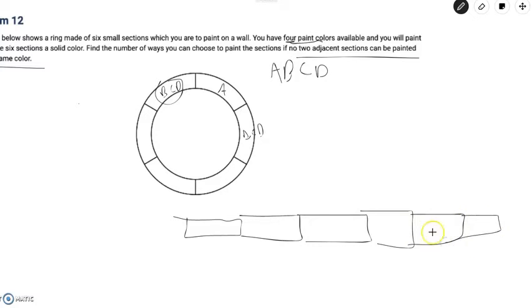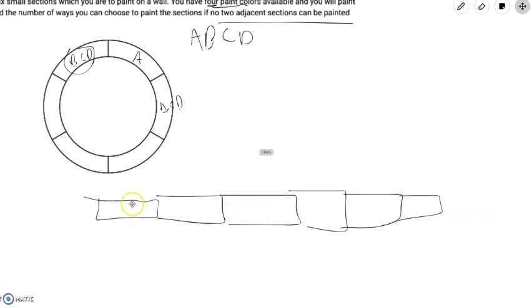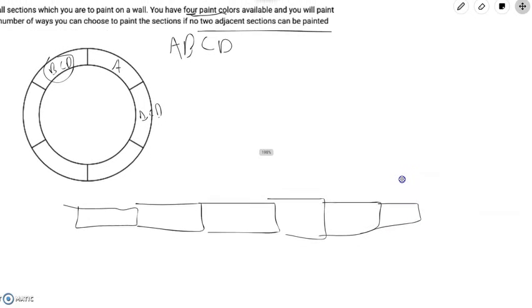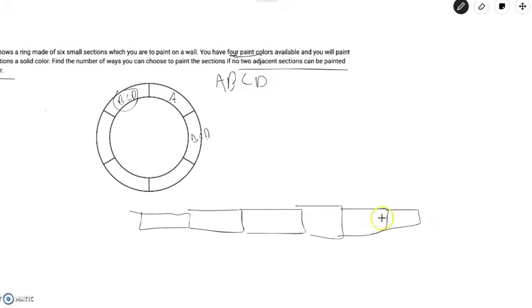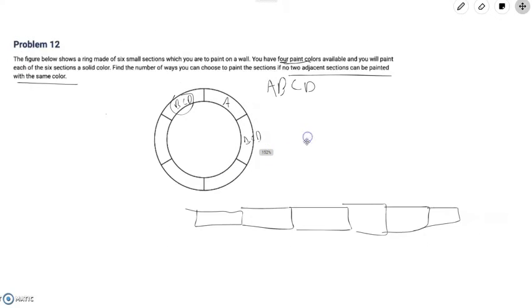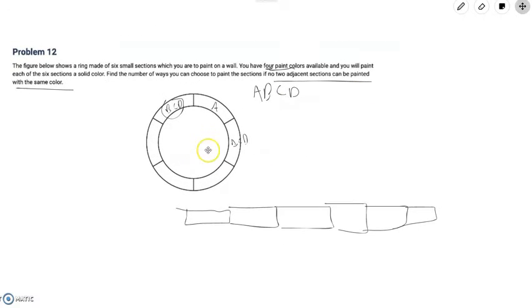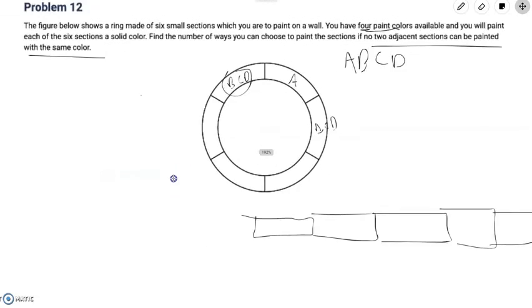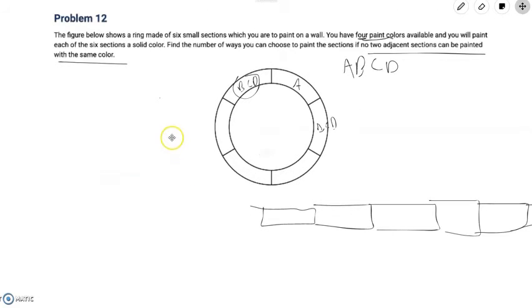Basically we can do our recursion this way and we just have to count the number of times the sixth section is other than A. So we just have to count the number of times the sixth section would be B C or D. And what this means is we also have to do casework on the paint color that we are currently using in a section. So since we only have four paint colors available we only have to have four columns and since we only have six sections we only need six rows.